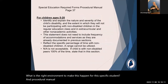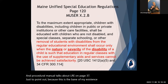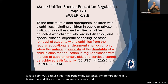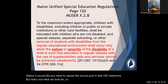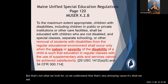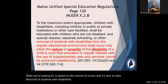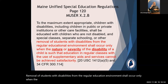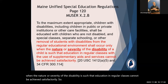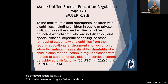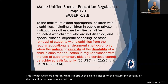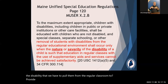The procedural manual talks about LRE on page 37. The prompt on the IEP form makes it sound like you need to repeat the service grid in the LRE statement, but that's not what we look for. Based on MUSER and IDEA, what we're looking for is: what is it about this child's disability — the nature and severity — that requires pulling them from the regular classroom to provide SDI?